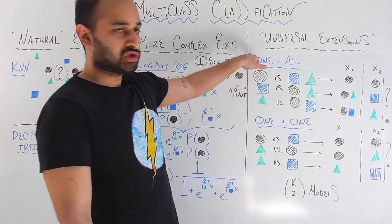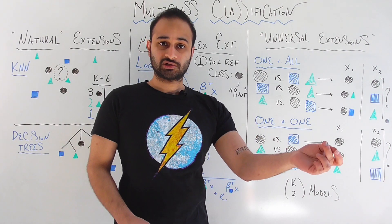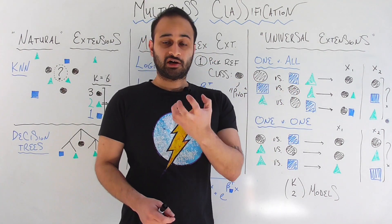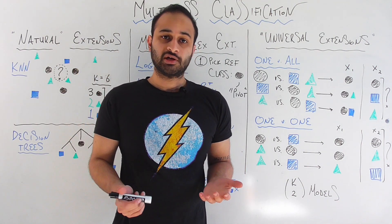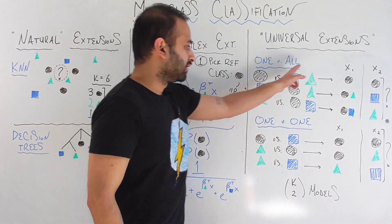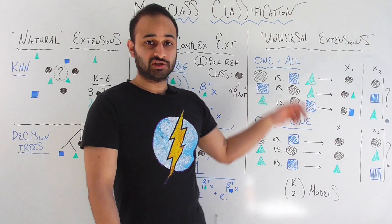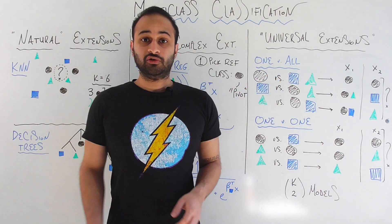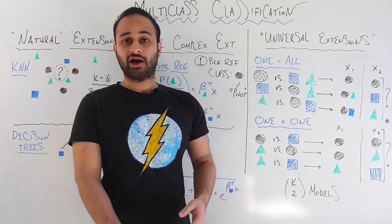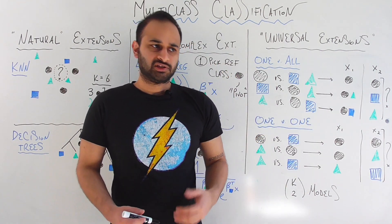The first universal technique is called one-versus-all. You have k classes — here we have three — and you build k different binary classifiers, where each one pits a given class versus all of the others. First, we keep all things labeled circles as circles, and lump squares and triangles into a second class, then run a binary classification on circles versus rest. Next, we treat squares as their own class and lump circles and triangles together, building another binary classifier. Finally, we treat triangles as their own class and lump circles and squares together.